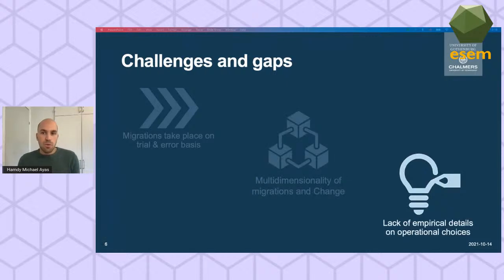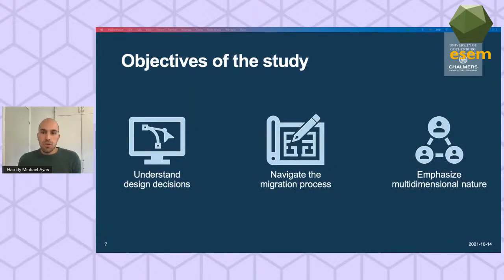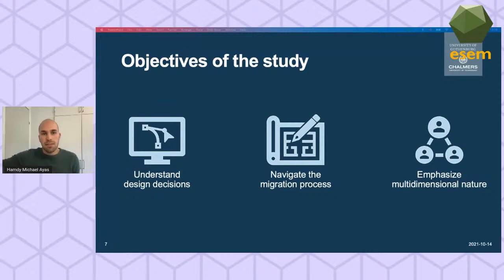There is a lack of approaches providing details on the operational choices that software development teams and organizations make during migrations, so there is room for empirical understanding of migrations from the engineers' point of view. The objective of this study is to holistically chart the decision-making processes that happen on different levels of microservices migration projects, inductively from empirical evidence. We aim to understand architectural design decisions in microservices, how they tackle different challenges, and give strong emphasis to the multidimensional nature of migrations — business, organizational, and technical.